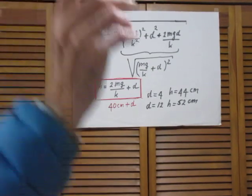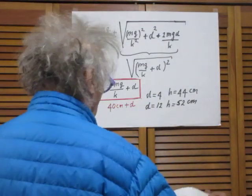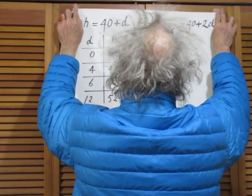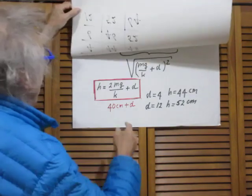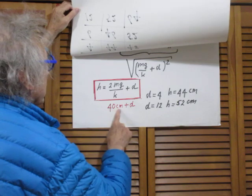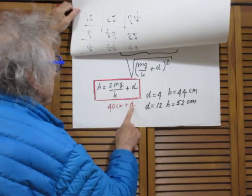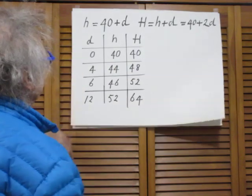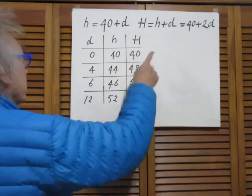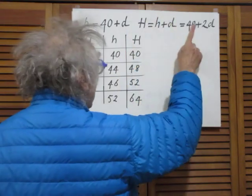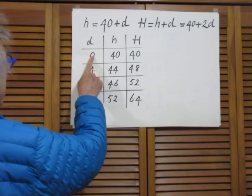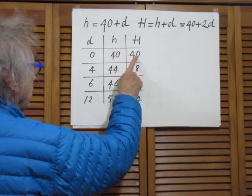Let me add a few more numbers that may help you. Remember that 2mg over k is 40 centimeters, so h equals 40 centimeters plus d. Capital H equals small h plus d, so it's 40 plus 2d. For d equals 0: h is 40 and capital H is also 40.